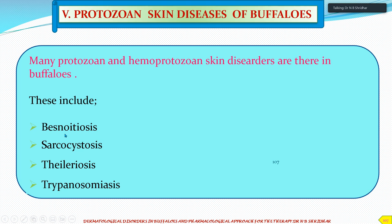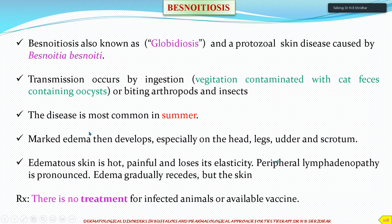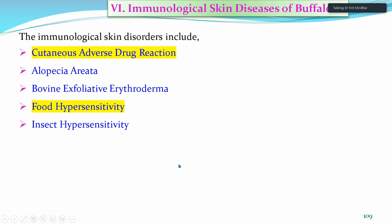Protozoan skin diseases of buffaloes include besnoitiosis, sarcocystosis, theileriosis, and trypanosomiasis, all causing dermatological disorders. Besnoitiosis is caused by Besnoitia besnoiti and is also a disease of the summer season; there is no good treatment for infected animals.